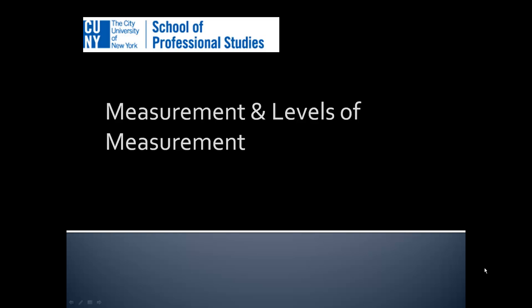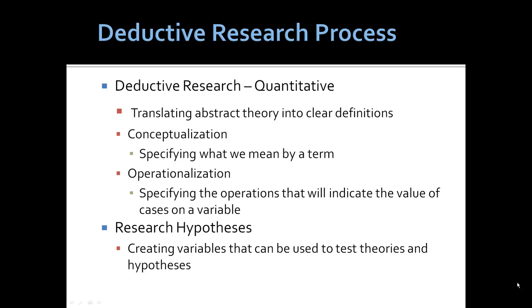Understanding measurement and levels of measurement is central to understanding the scientific method, especially the quantification of data for testing hypotheses. The deductive research process, unlike the research process outlined in qualitative methods and observation — the inductive method — is typically quantitative. It is often simply called the scientific method or the logico-deductive method. It involves the translation of abstract theory into clear definitions of concepts in ways that the theory can be tested with data.